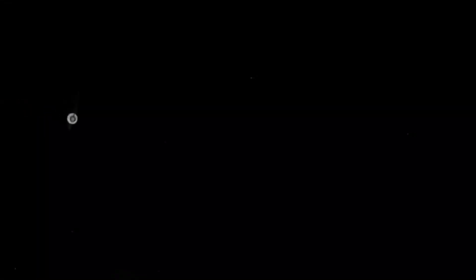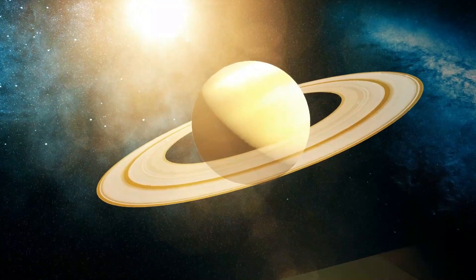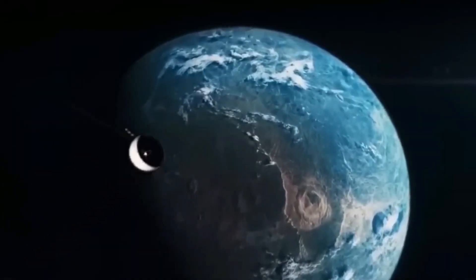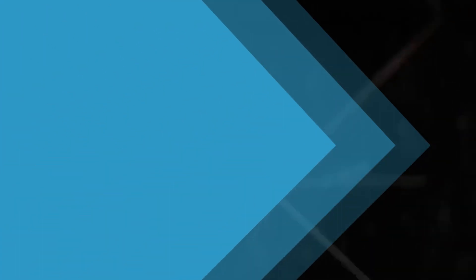While Voyager 2 kept racing to Uranus and Neptune, becoming the first spacecraft to do so, Voyager 1 started its journey to reach the edge of our solar system. At about 6 billion kilometers from the Sun, Voyager 1 took the first family photo of the solar system. The official start of the Voyager interstellar mission was in 1990.